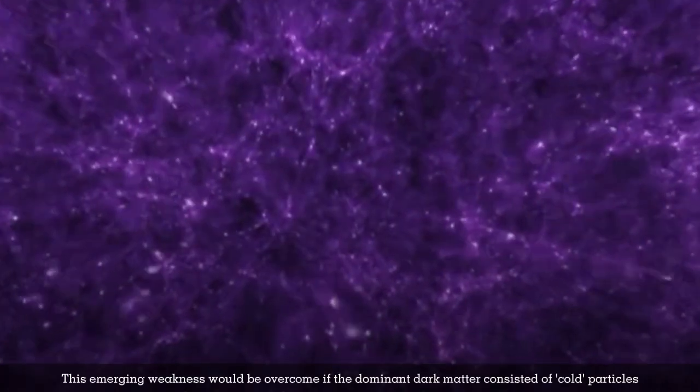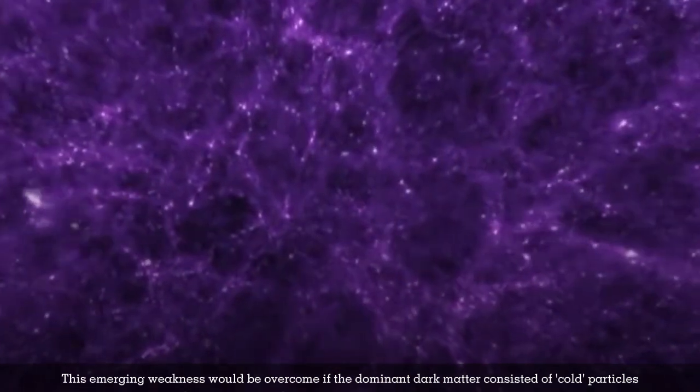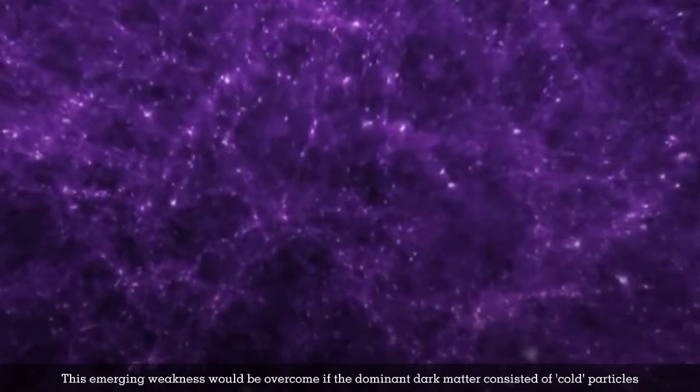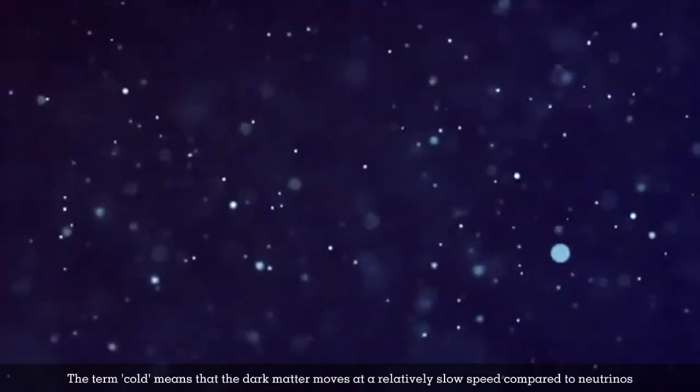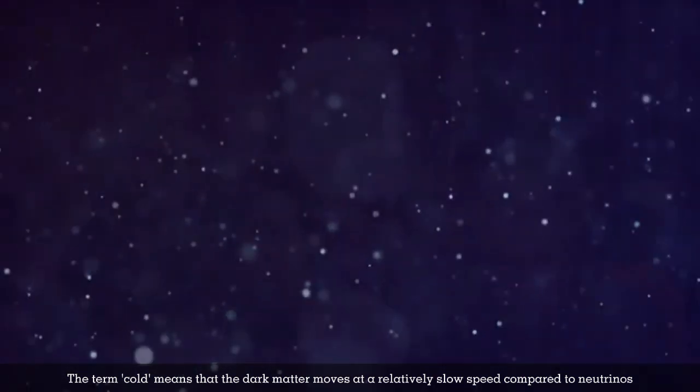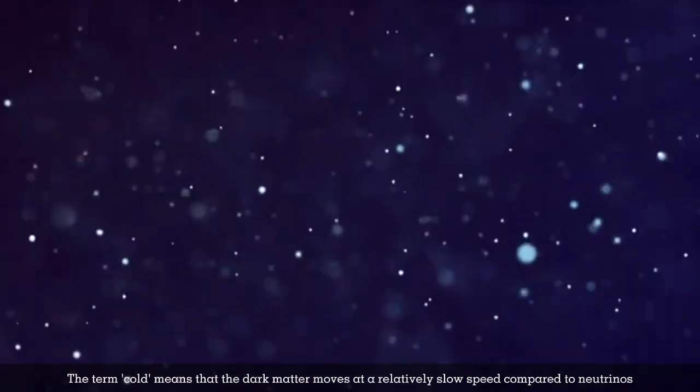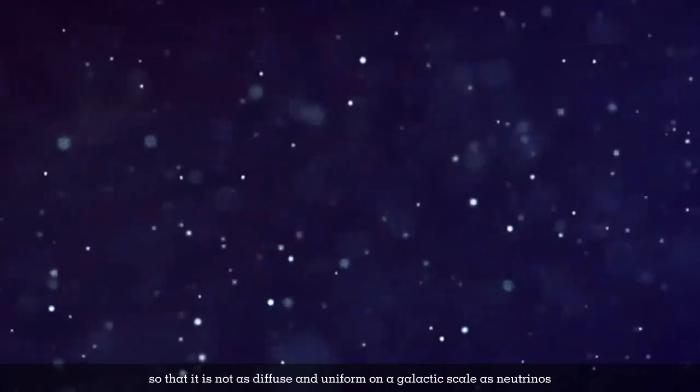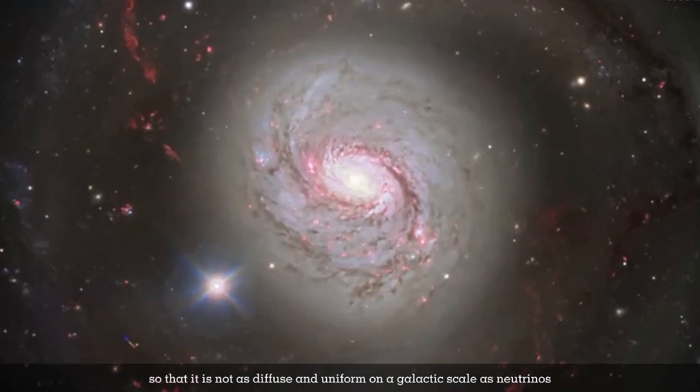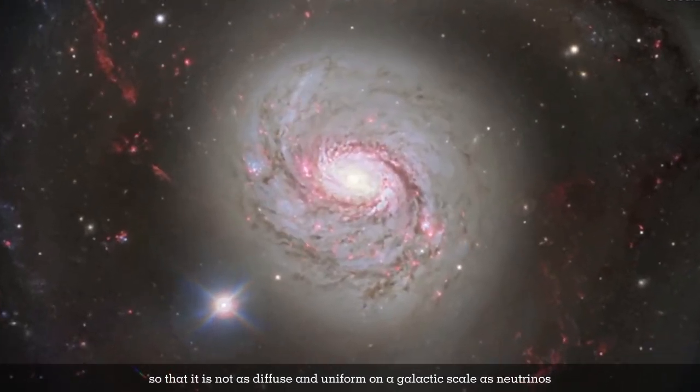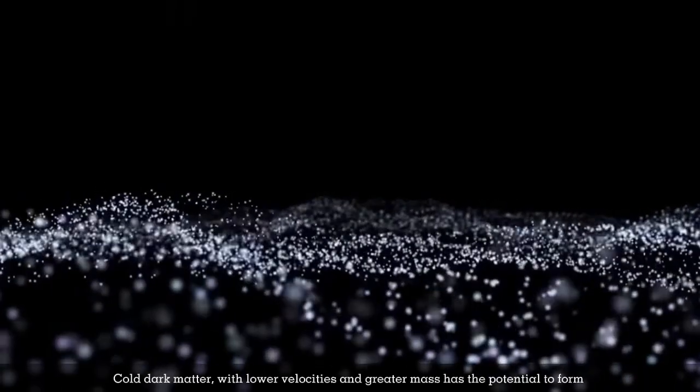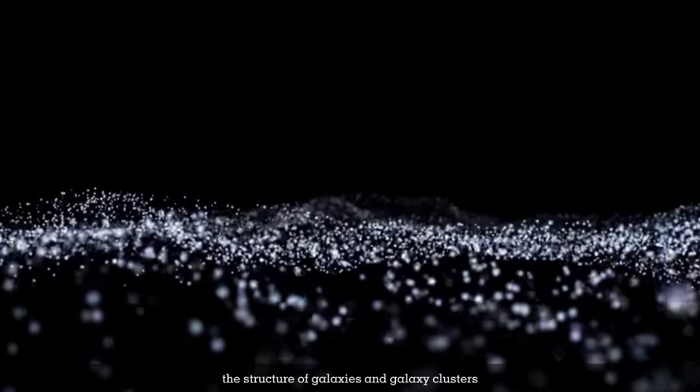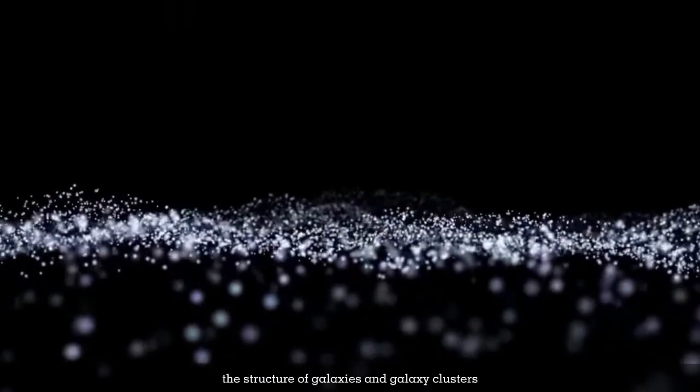This weakness would be overcome if the dominant dark matter consisted of cold particles, called cold dark matter. The term 'cold' means the dark matter moves at relatively slow speeds compared to neutrinos, so it's not as diffuse and uniform on a galactic scale. Cold dark matter with lower velocities and greater mass has the potential to form galaxies and galaxy clusters.